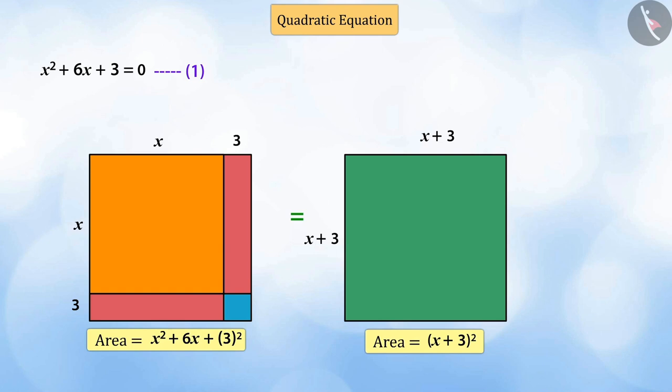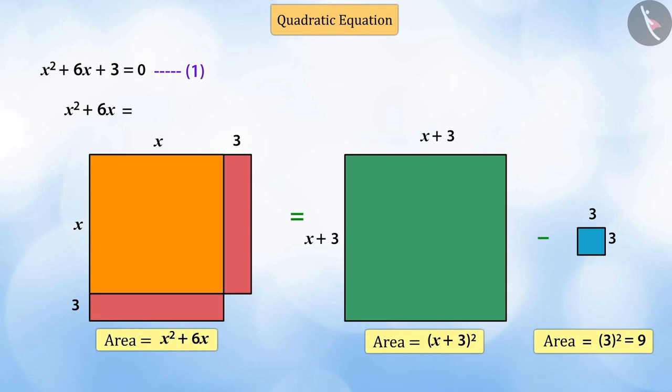To retain the area of the figure x square plus 6x, we will subtract the area of a square piece of side 3 units, which is 9 square units. Thus, the expression x square plus 6x can be written as x plus 3 the whole square minus 9.